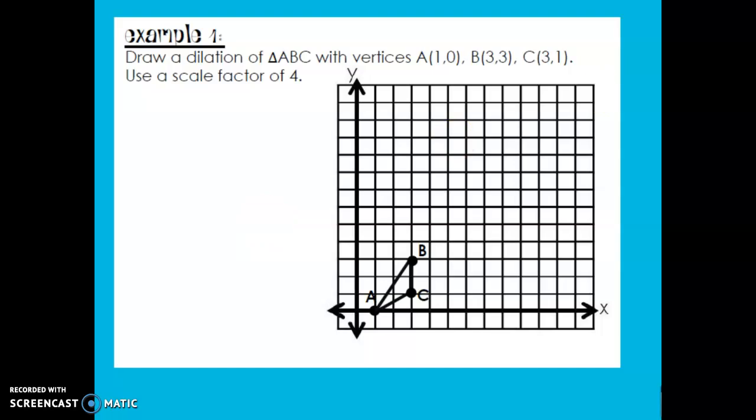Let's do an example. Draw a dilation of triangle ABC with vertices A(1,0), B(3,3), C(3,1). Use a scale factor of 4. On the previous slide, we talked about your motion rule, also known as algebraic representation, would be (x, y) to (kx, ky).